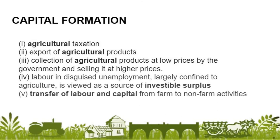Finally, we have capital formation. Underdeveloped and developing countries need a huge amount of capital for economic development. When the economy is at its initial stages of development, agriculture is the most important source of capital formation. The agricultural sector provides funds through agricultural taxation, export of agricultural products, and collection of agricultural products at low prices by the government and selling at higher prices — a practice followed by Russia and China. In countries like India, the government buys agricultural products at a fair price to ensure farmers get sufficient income.